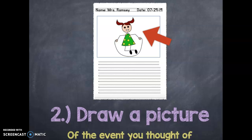Step two will be to draw a picture of the event you thought of. So in this case, I thought of a time I had fun at recess was when I was jumping with the jump rope. So I'm going to draw a quick sketch. It doesn't have to be extremely detailed. The purpose of the sketch is to help me remember what I'm going to write about.